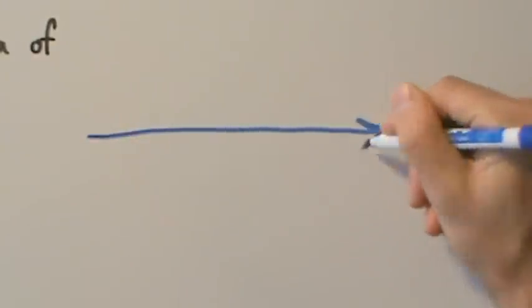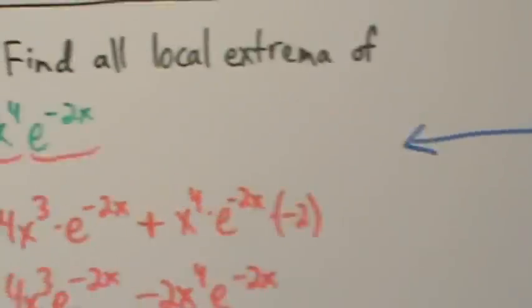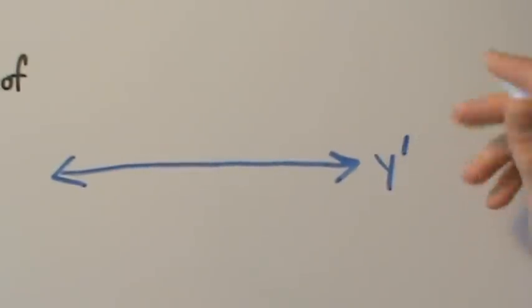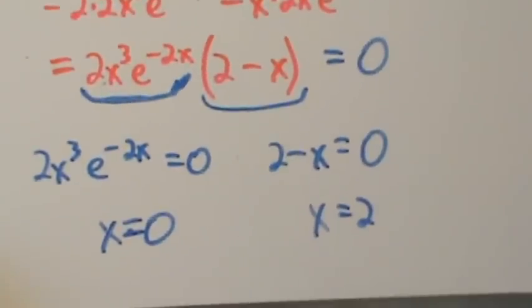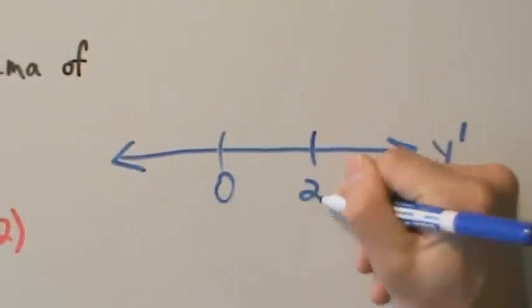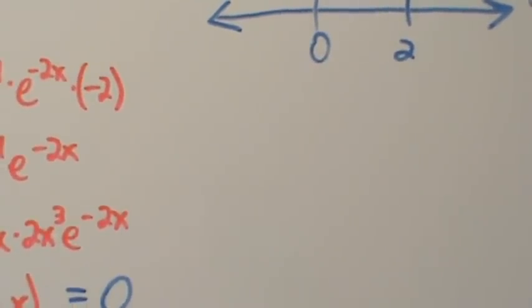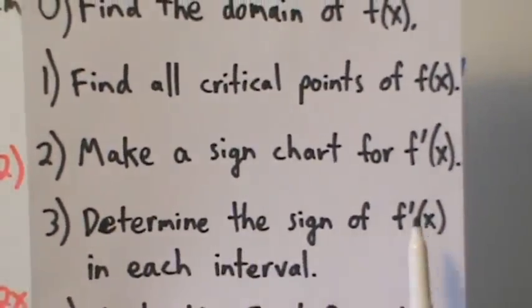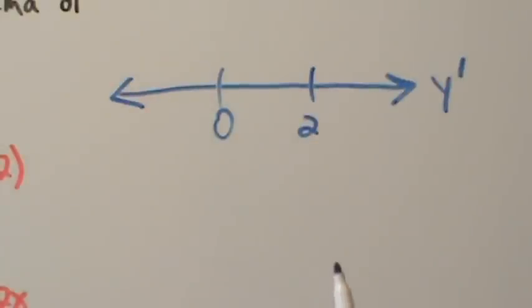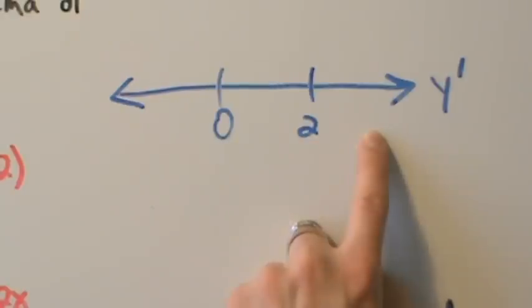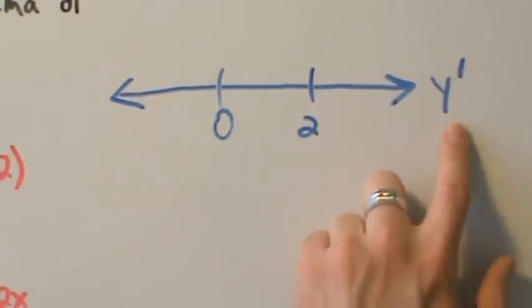Step 2: make a sign chart for the derivative y prime. We label the chart y prime and place both critical points on it: 0 and 2. This gives us three intervals to analyze: negative infinity to 0, 0 to 2, and 2 to infinity.